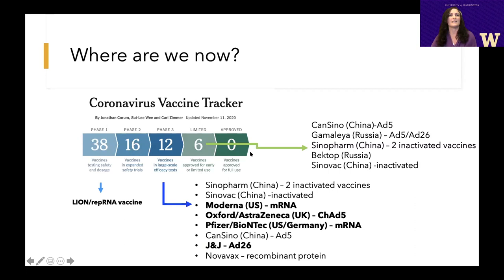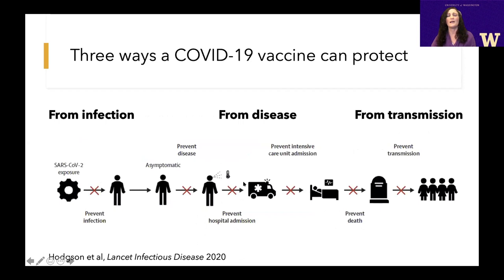Where are we now? We have a wide variety of vaccines in various phases of clinical trials. The ones in phase one, like ours, are what we call second-wave vaccines that may address shortcomings of some of the leading vaccines. We're very excited to see not only Moderna and Pfizer, but AstraZeneca and J&J rapidly accelerating vaccines, and we anticipate they'll get licensed for use very soon.